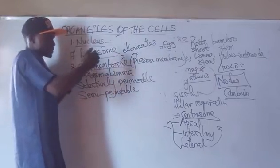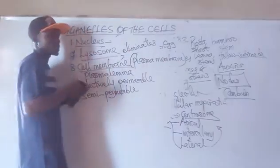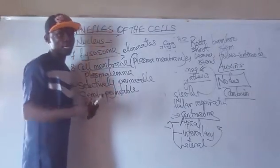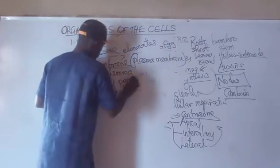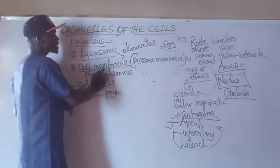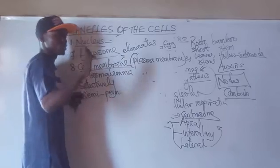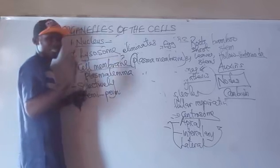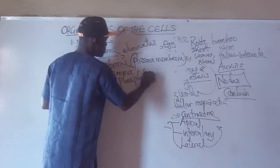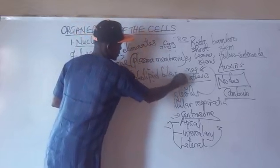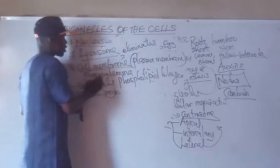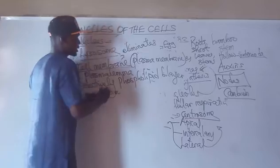The cell membrane separates the internal organelles from the external environment. That is why the cell membrane is also called the gatekeeper. The basic unit of the plasma membrane is a phospholipid bilayer — this is very important to note.